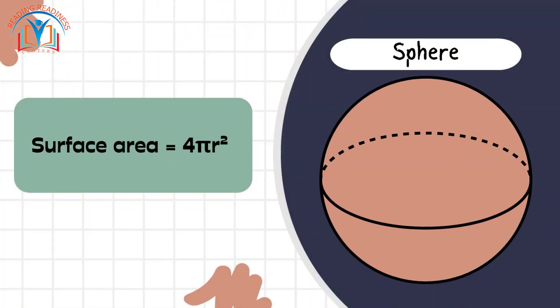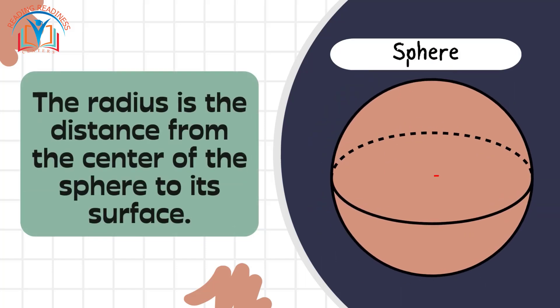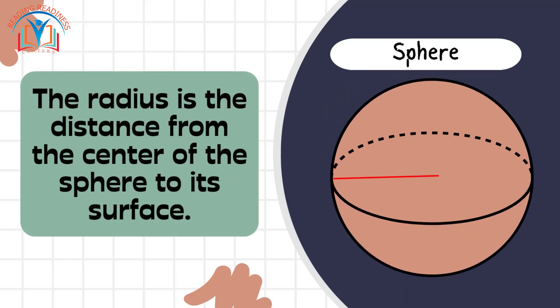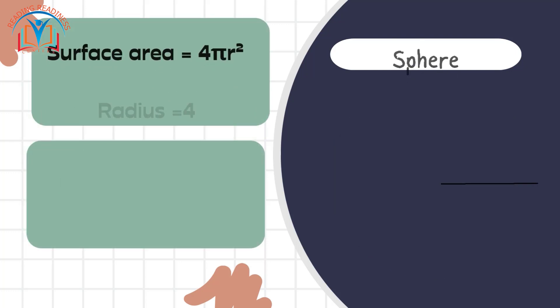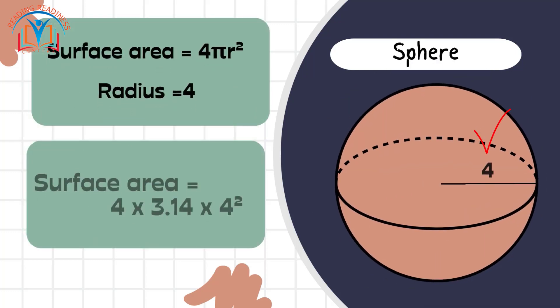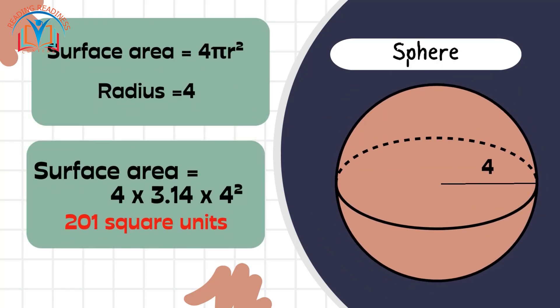To find the surface area of a sphere, we use the formula 4 times pi times the radius squared. The radius is the distance from the center of the sphere to its surface. Imagine a sphere with a radius of 4 units. Plug that into our formula, and we get 4 times pi times 4 squared, which equals 64 pi square units, or approximately 201 square units.